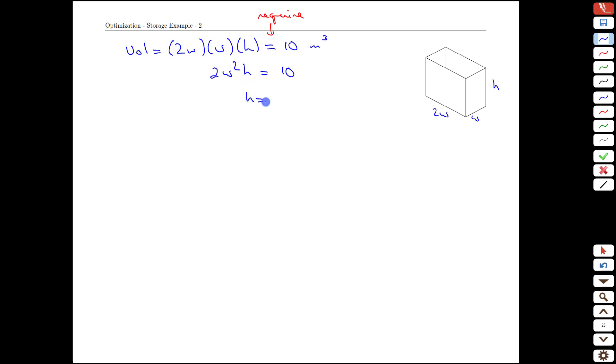And notice how we can isolate h if we like. It seems easier than isolating w. The 10 over 2 cancel. And we get h is 5 over w squared.